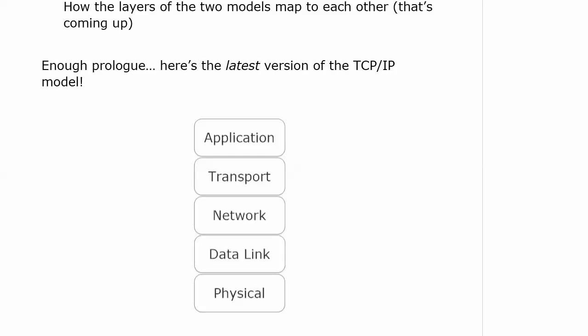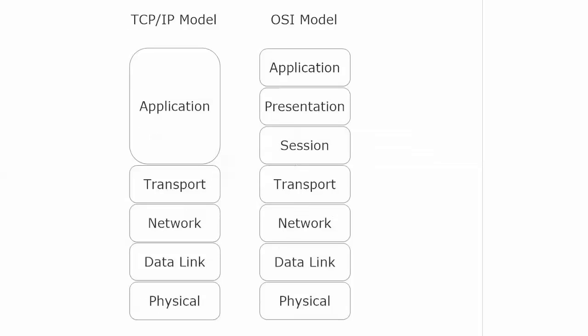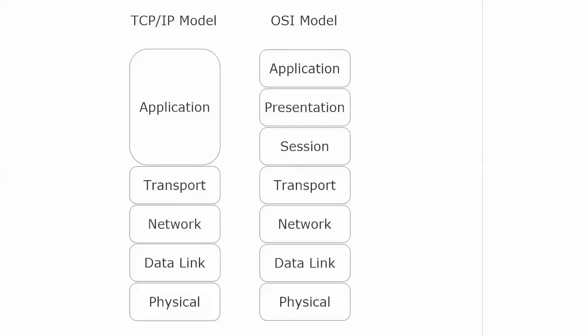So if we've got five layers here and we've got seven layers of the OSI model, and they map to each other and are really illustrating the same processes, there's got to be at least one layer in the TCP/IP model that maps to multiple layers of the OSI model. And here is that mapping — you can see it's as straightforward as it could possibly get, and that is a pleasant change.